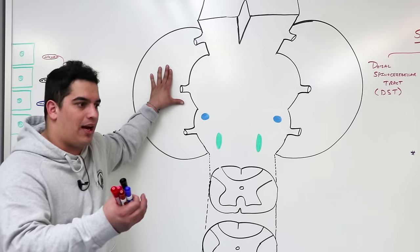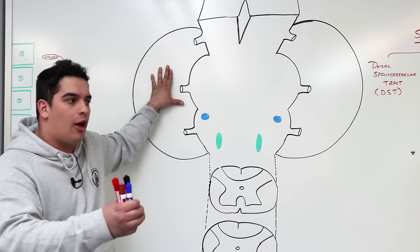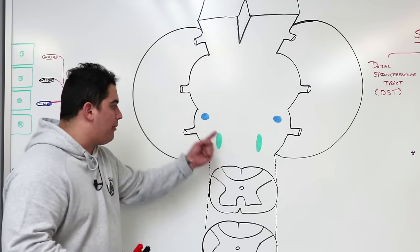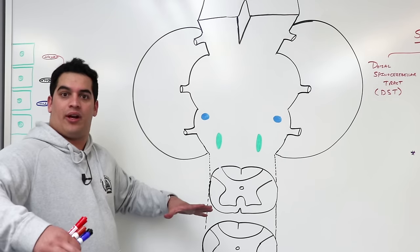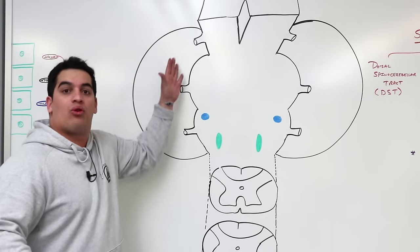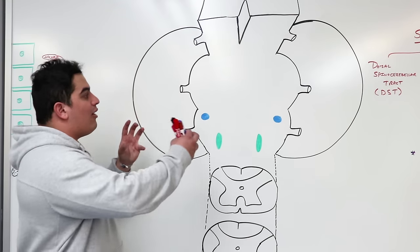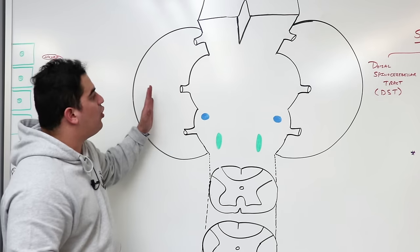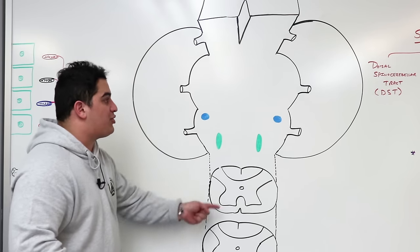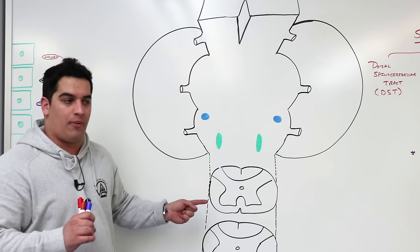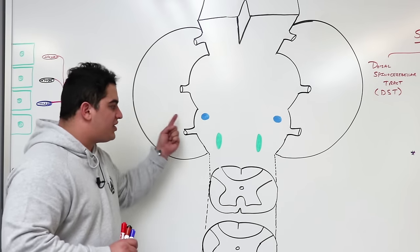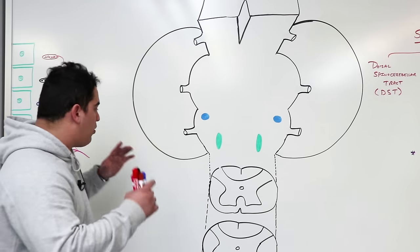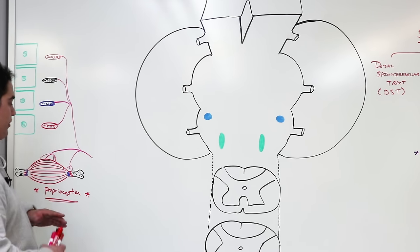How does the cerebellum maintain posture and coordinate precise muscle movements? It gets incoming sensations from the periphery and also consults with the cerebral cortex, allowing it to calculate accurate movement. The cerebellum constantly needs information from appropriate receptors — the primary stimulus is proprioception, though it can also receive some sensations from touch and pressure receptors.